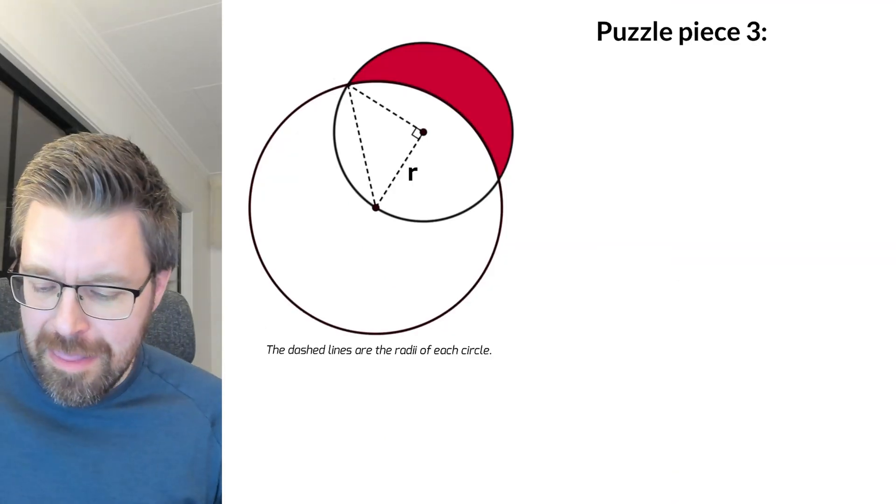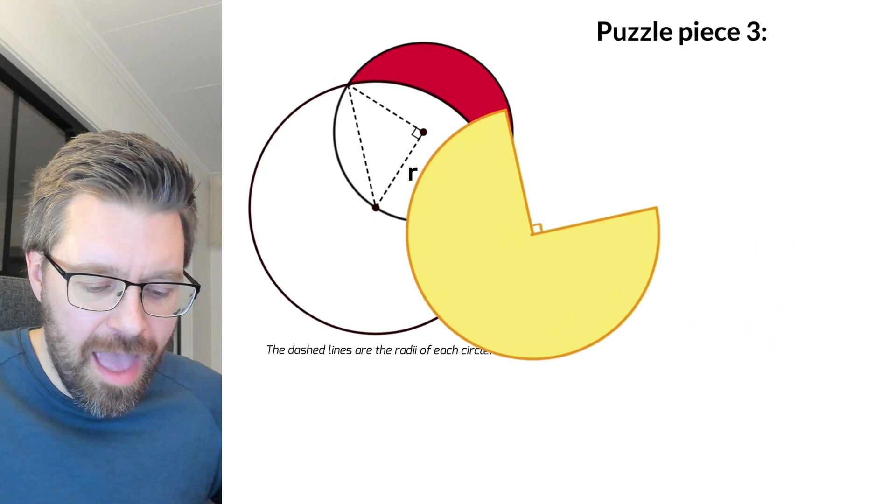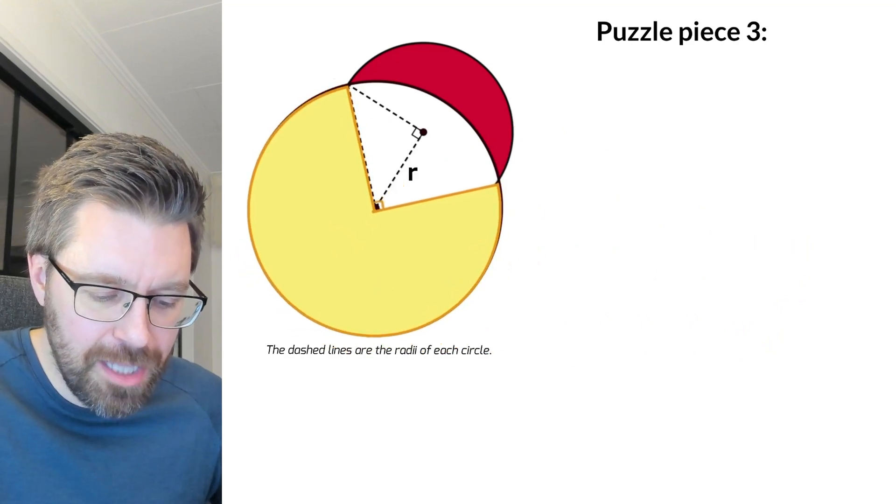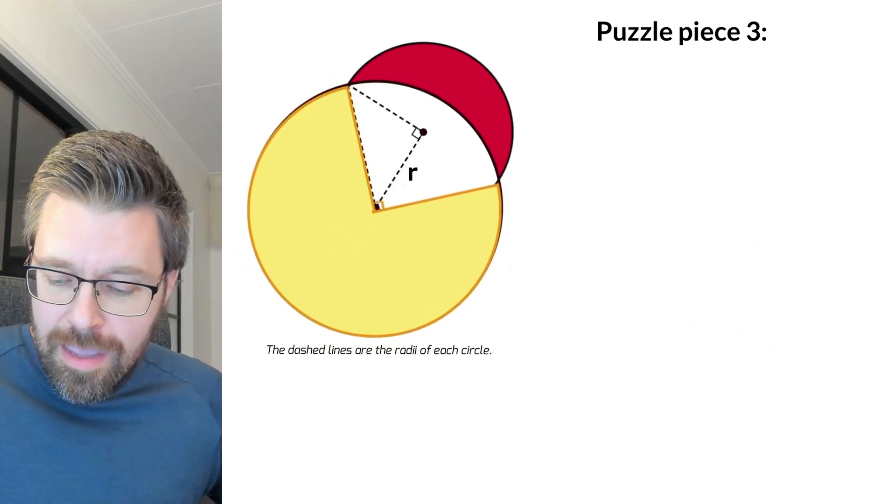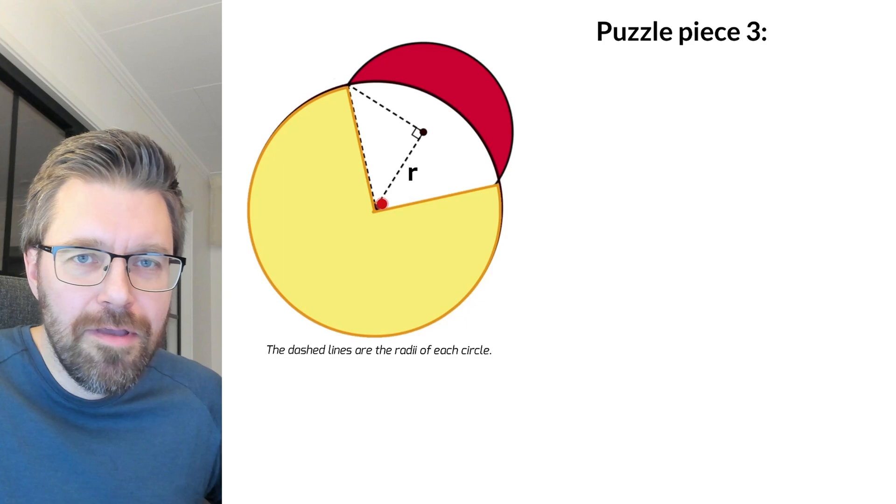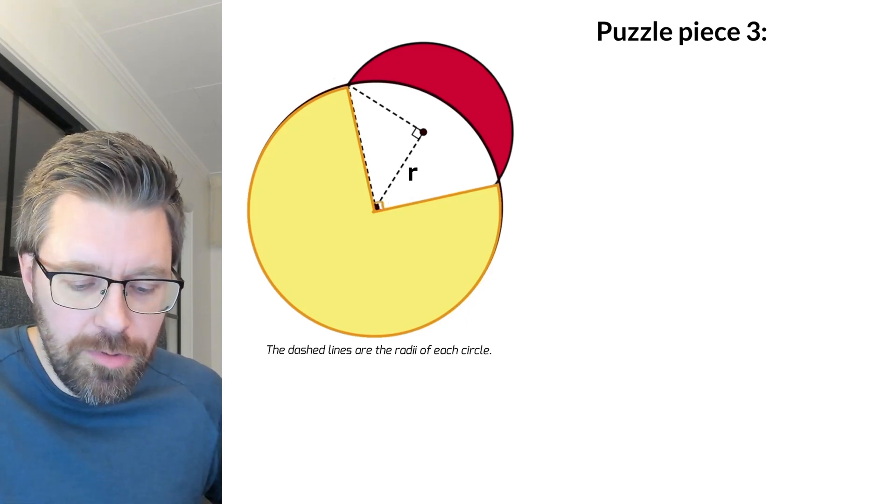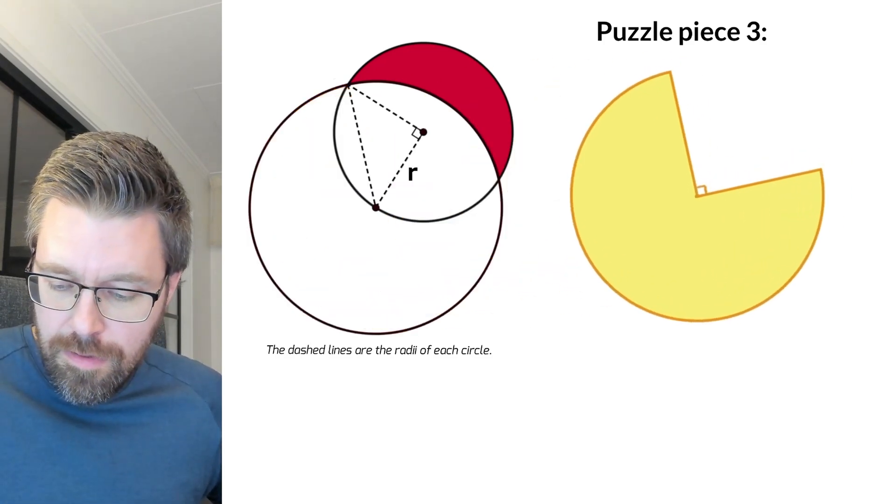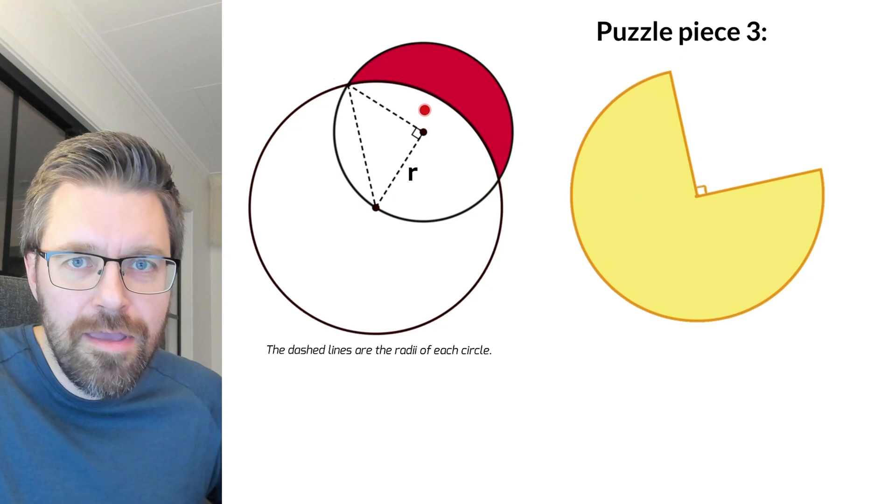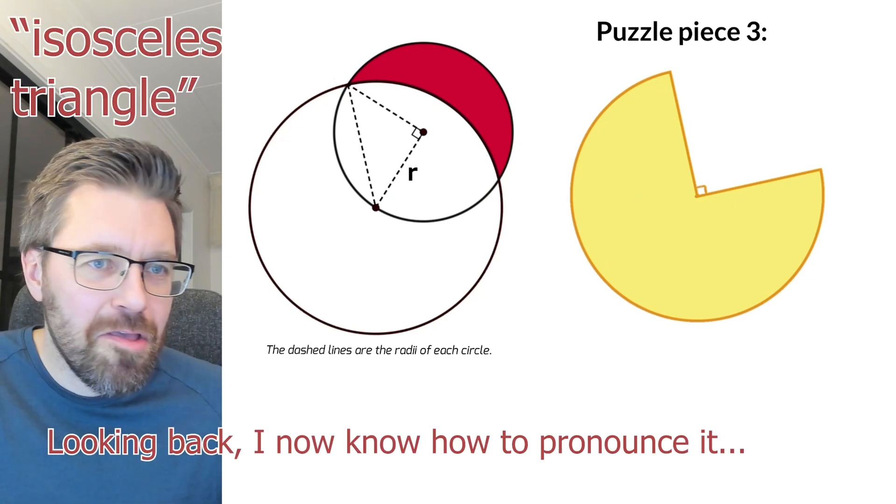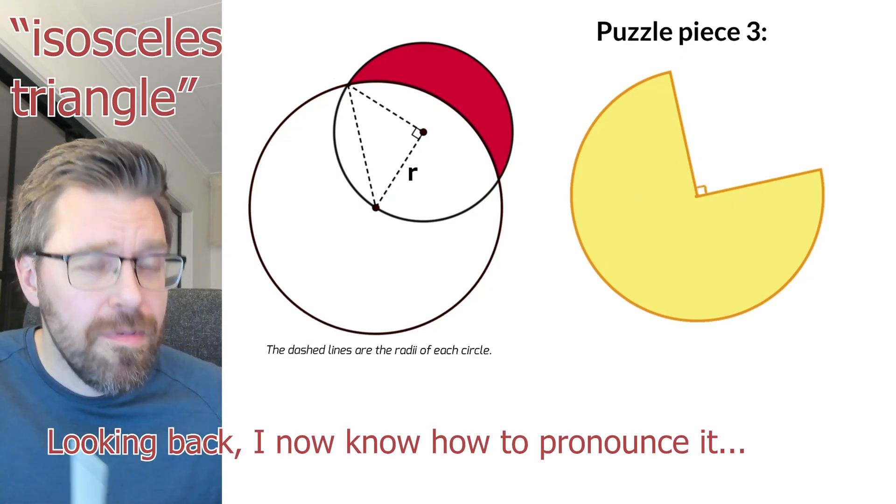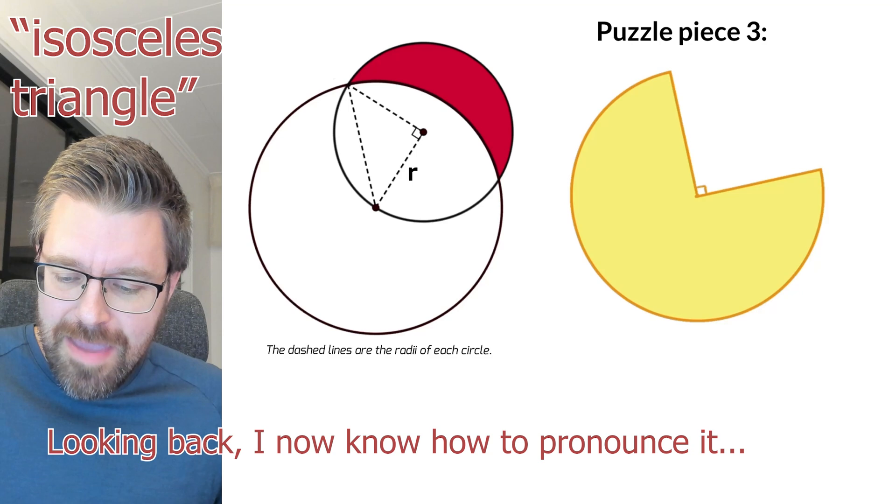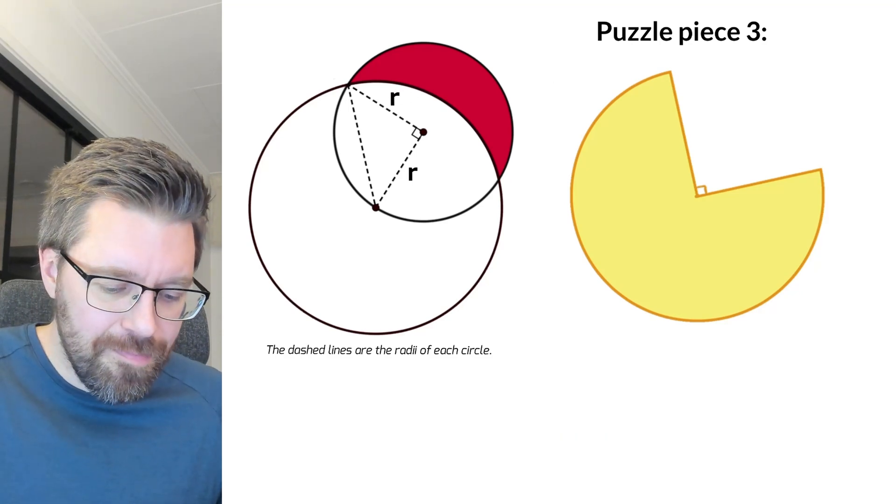The next puzzle piece is a nice yellow piece. And it fits in here in the picture. And I know that this angle here is a right angle, 90 degrees. And it is because of this triangle here. It is an isosceles triangle. It means that two sides are the same.